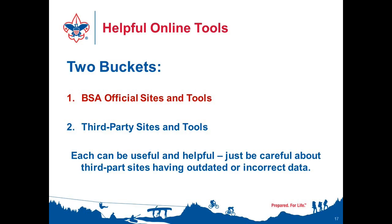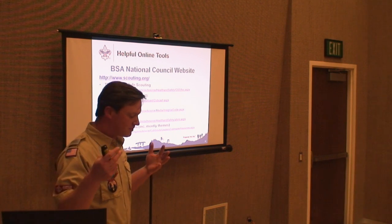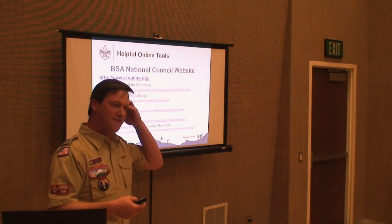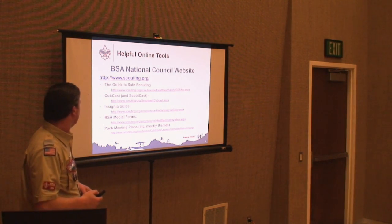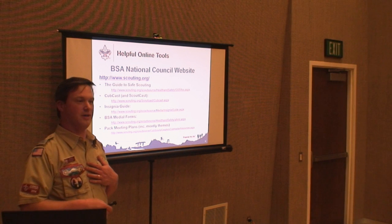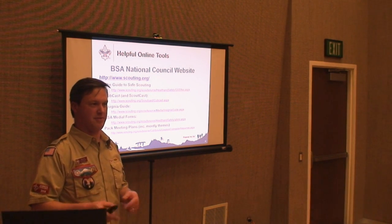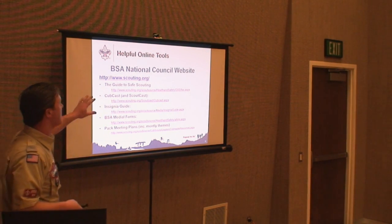First, the National Council website. A lot of people have some issues finding the right information. Last month a gentleman was trying to remember the five-step process to get to the monthly plans and themes page that has all the PDF files for each month. The easy way I get to it is to go to Google and search 'scouting cub scout meeting plans.' Improve your Google-fu and it'll get you there faster.